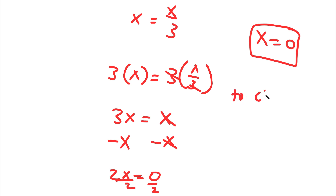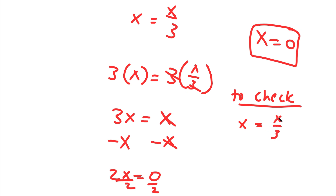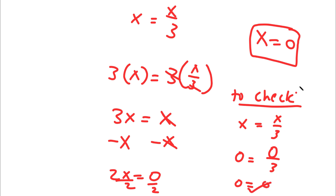Now to check: starting with x equals x over 3, and substituting x equals 0, I have 0 equals 0 over 3. Since 0 divided by 3 is 0, I get 0 equals 0, meaning my solution is correct.